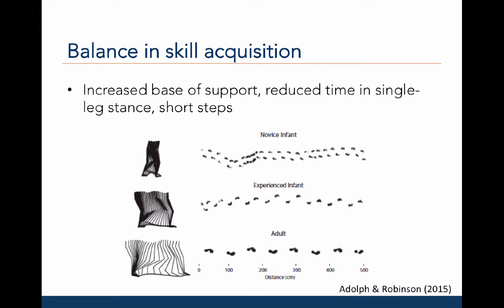During motor skill acquisition, it is common to sacrifice stability for movement. For example, in this figure, a novice infant, an experienced walking infant, and an adult are depicted while walking. The novice walker has a wide base of support in that the steps are very wide — it's as if the novice infant is waddling back and forth rather than really moving forwards. Second, the novice infant spends little time in single leg stance, or balancing on one foot while walking. Third, the novice walker takes very short steps, such that there is very little time in which he or she only has one foot on the floor.